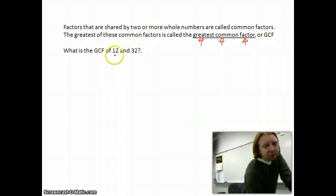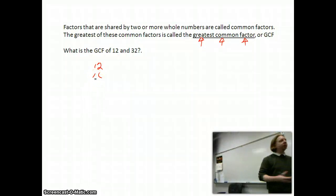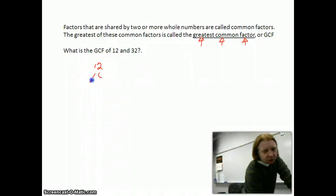What we're going to do is the prime factorization of each of them. So let's take 12 and look at the prime factorization. 12 would be 2 times 6. If it's an even number, you can always start off with 2. And 6 we know is 2 times 3. So the prime factorization of 12 is 2 squared times 3.